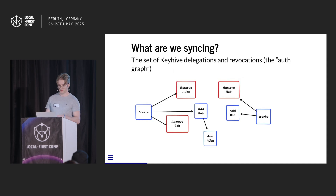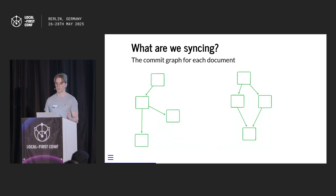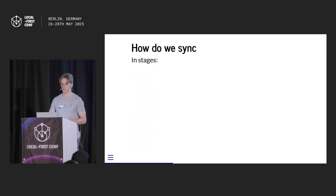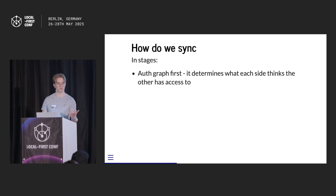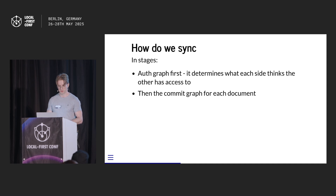What are we synchronizing? We're synchronizing the graph of operations that determines who has access to what documents. And underneath that, we're synchronizing the actual commit graph, which contains the content of each document. I think of this as two layers. We have to synchronize in two stages: first we synchronize the auth graph, which determines what things we think the other side should be allowed to fetch from us and what we think the other end will let us write to and read from. Then we synchronize the commit graph for each document.